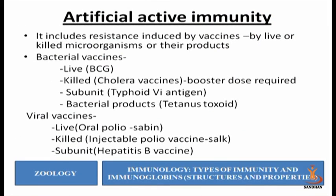Viral vaccines can also be live — for example, oral polio vaccine, which is part of the polio eradication program. Killed injectable polio vaccines are also available. Subunit vaccines are also used, for example the hepatitis B vaccine. All the vaccinations we receive give us artificial active immunity.